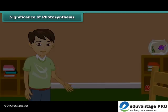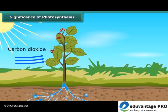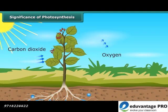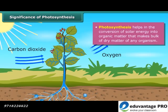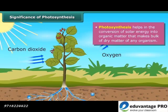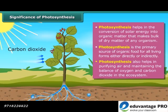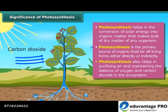Photosynthesis is an important and vital process for life on this planet. This process helps in the conversion of solar energy into organic matter, hence photosynthesis links the physical and biological world. It is the primary source of organic food for all living forms, either directly or indirectly. It also helps in purifying air and maintaining the balance of oxygen and carbon dioxide in the ecosystem.